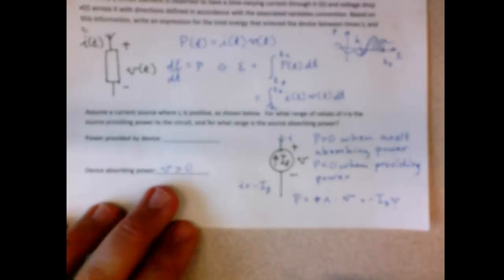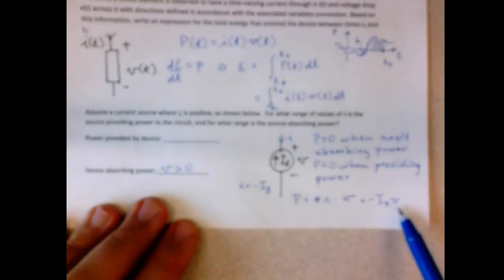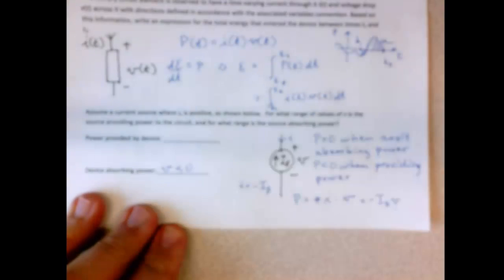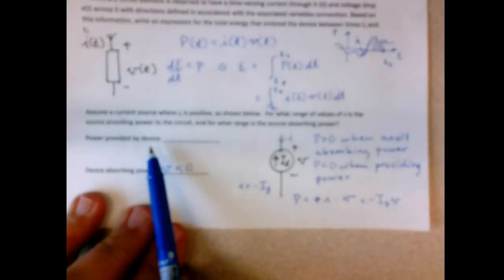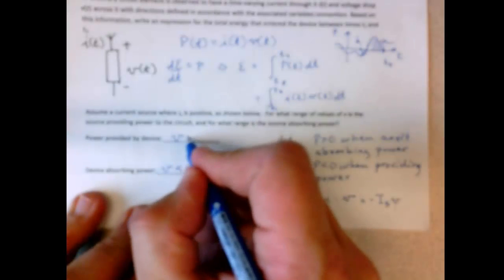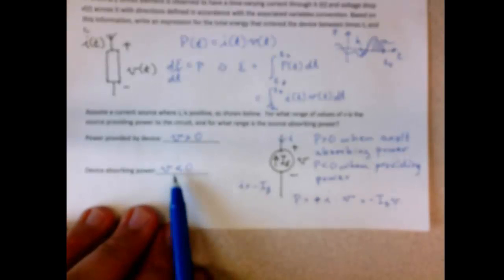The device is going to be, sorry, I think I just, let me just double check that. Power is current times voltage. Current is minus I S. Therefore, we're asking first power is, the device is absorbing power for this power will be positive. So we need V to be negative. Yeah, that's wrong. V to be negative. Then for the second case, power provided device, we need P to be negative. So in this case, we need V to be positive. All right. So you can see it's easy to get the sign wrong there. I almost did myself. And hopefully that clarifies the problem for you.